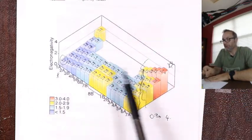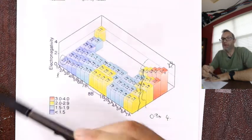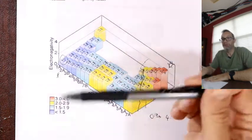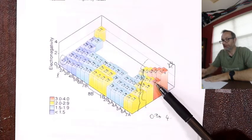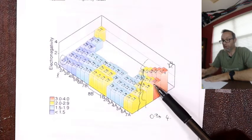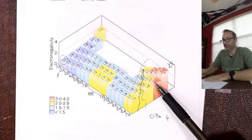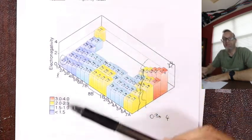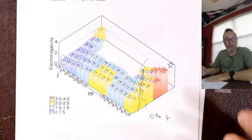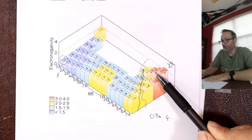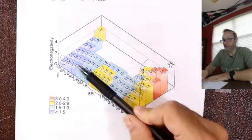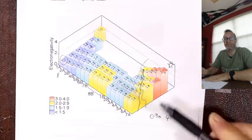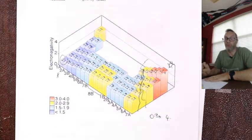We talked about electronegativity briefly when we talked about the order of atoms in compounds. It's always Na first and Cl second for sodium chloride because it's weak first, strong second. Every other compound we've seen — even molecules, carbon first which is weaker than oxygen — it's the bottom-left to top-right trend in electronegativity: always weak first, strong second.